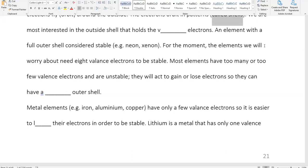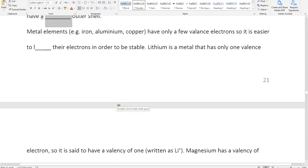For the moment, the elements we will worry about need eight valence electrons to be stable. Most elements have too many or too few valence electrons, and they are unstable. They will act to gain or lose electrons so that they can have a full or complete outer shell. Metal elements, so iron, aluminum, copper, they only have a few valence electrons, so it is easier for them to lose electrons in order to be stable.